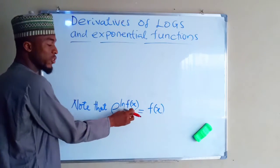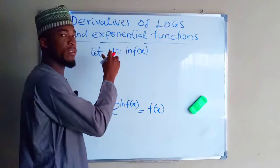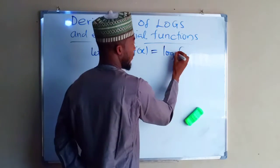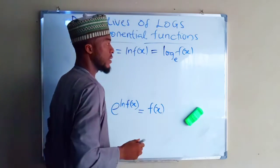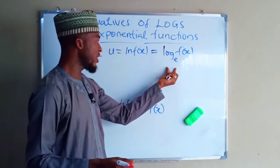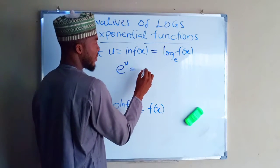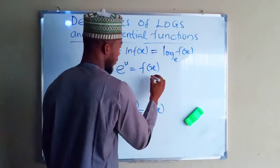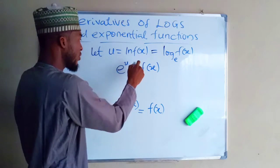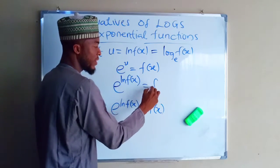Suppose the natural log of a function f(x) is equal to u. You know that natural log is a logarithm to the base e, so we can say this is the same as log of the function to base e. Therefore, by definition of logarithm, this function is the same as e to the power of u. So e^u gives us f(x), but u is natural log of f(x), so e^(ln f(x)) is the same thing as f(x).